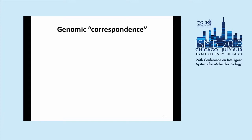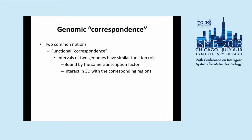There are two general ways to define correspondence between genomes. The first is functional correspondence, where we identify regions that have similar function to each other. In regulatory genomics, this might mean finding a region bound by a transcription factor and finding the corresponding region in the other species genome that's also bound by that factor, or regions that interact in 3D with some other region, finding the corresponding region in the other species with that same 3D interaction. Those are functional correspondences where the biochemistry corresponds.